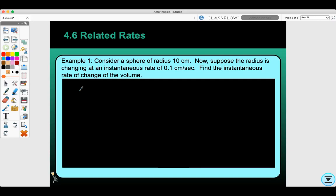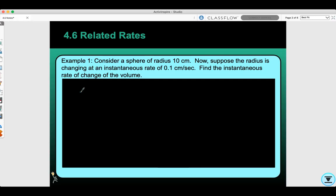Today we're doing section 4.6, related rates. Example 1: Consider a sphere of radius 10 centimeters. Now suppose the radius is changing at an instantaneous rate of 0.1 centimeters per second. Find the instantaneous rate of change of the volume.